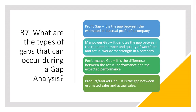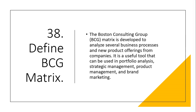Question 37: What are the types of gaps that can occur during a gap analysis? Profit gap — the gap between the estimated and actual profit of a company. Manpower gap — denotes the gap between the required number and quality of workforce and actual workforce strength in a company. Performance gap — the difference between actual performance and expected performance. Product market gap — the gap between estimated sales and actual sales. Question 38: Define BCG matrix. The Boston Consulting Group (BCG) matrix is developed to analyze several business processes and new product offerings. It is a useful tool for portfolio analysis, strategic management, product management, and brand marketing.